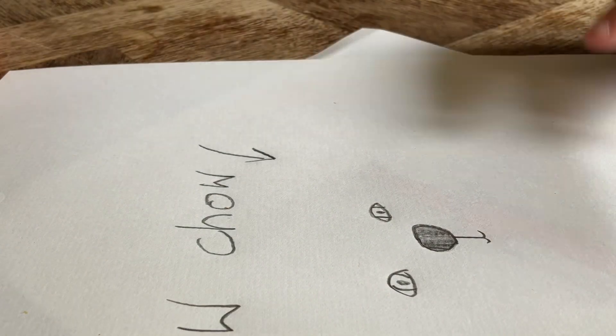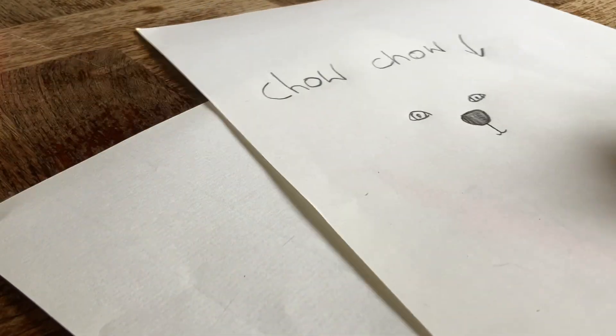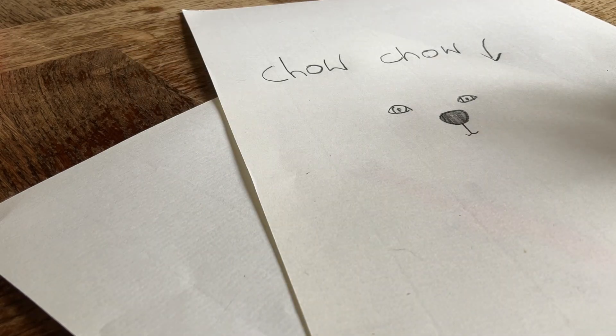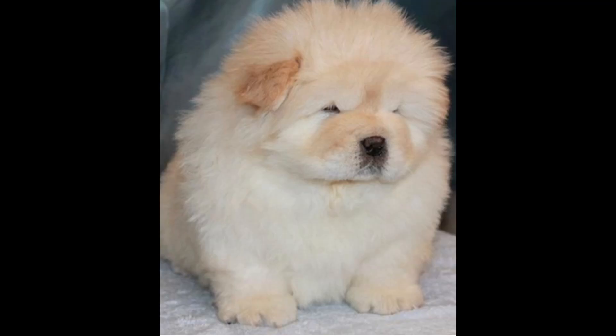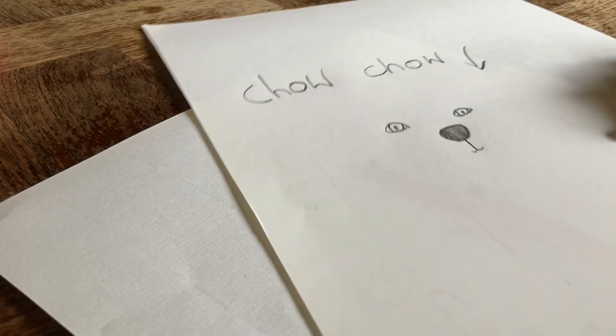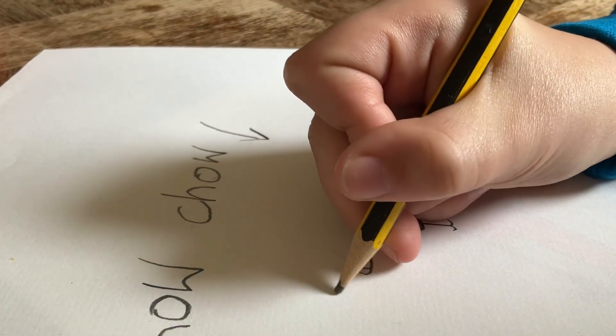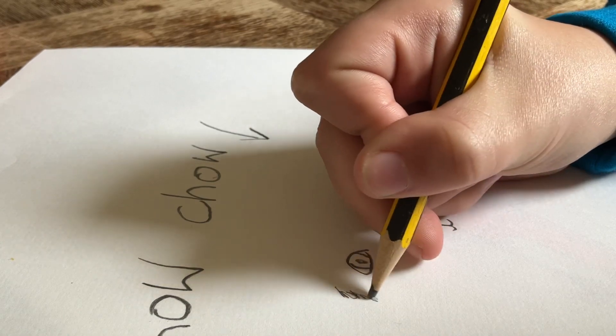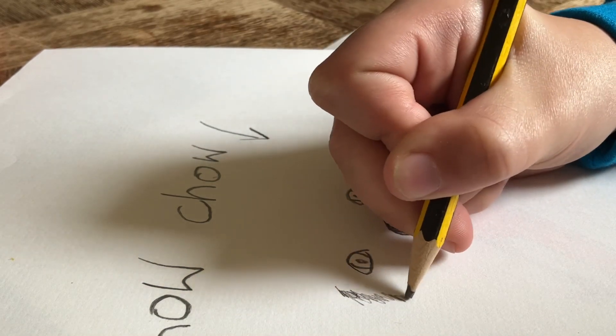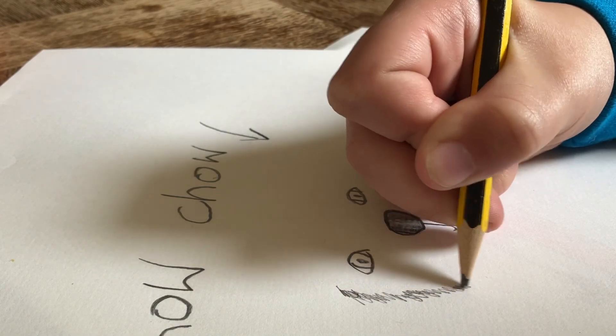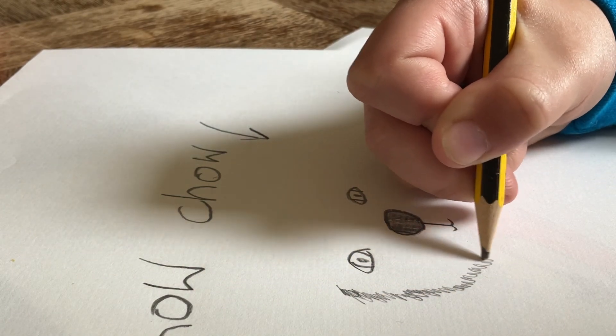Then, because chow chows are really cute and they look really fluffy, they look a bit like this. So now you have seen a picture of the chow chow that we are drawing. You are going to do a sort of like a shading bit, like a scribble around its face.